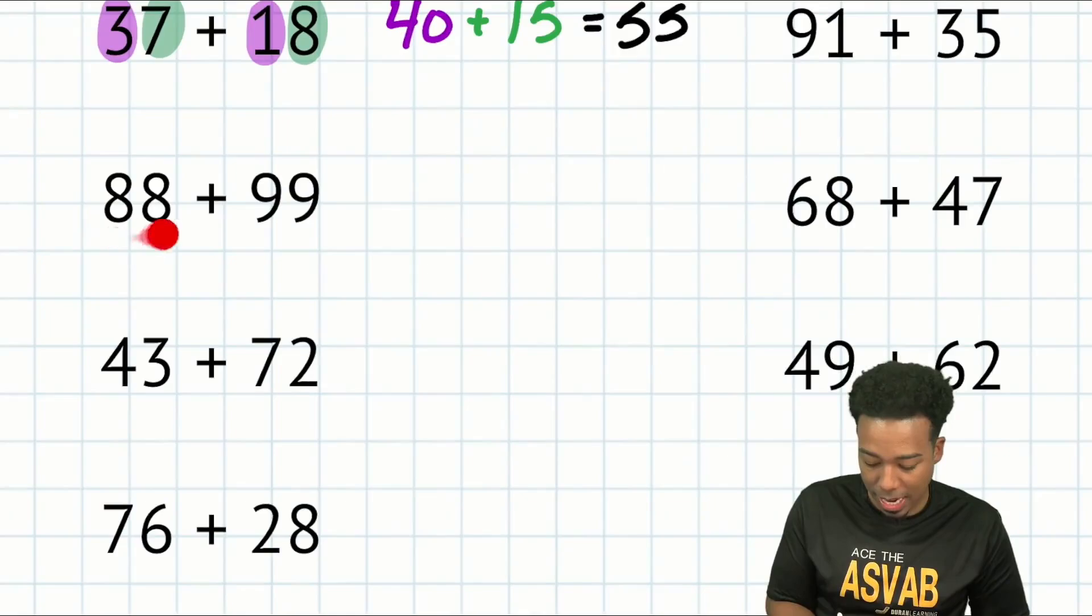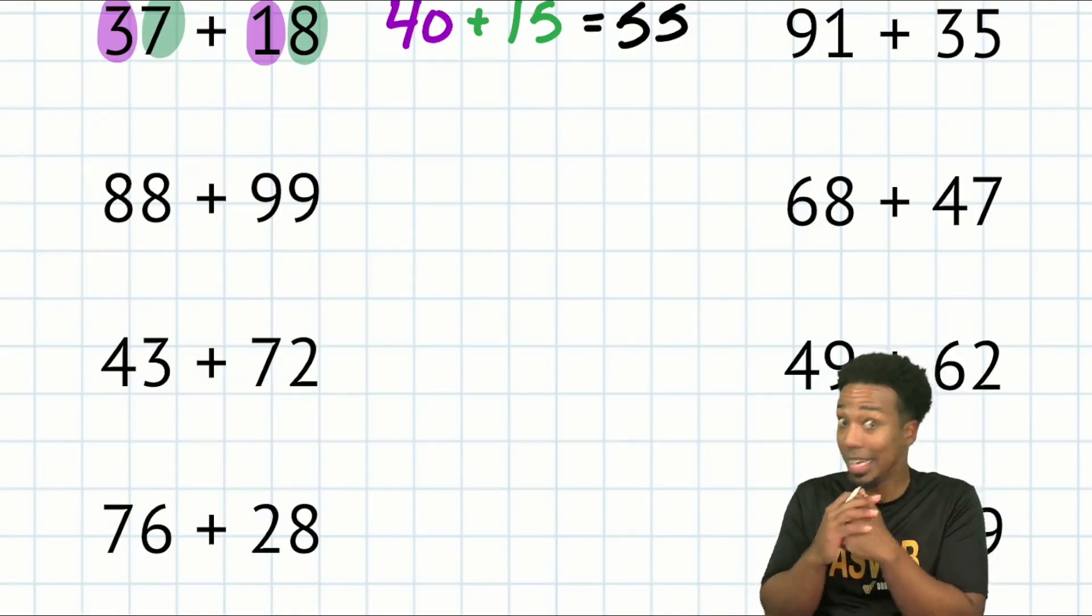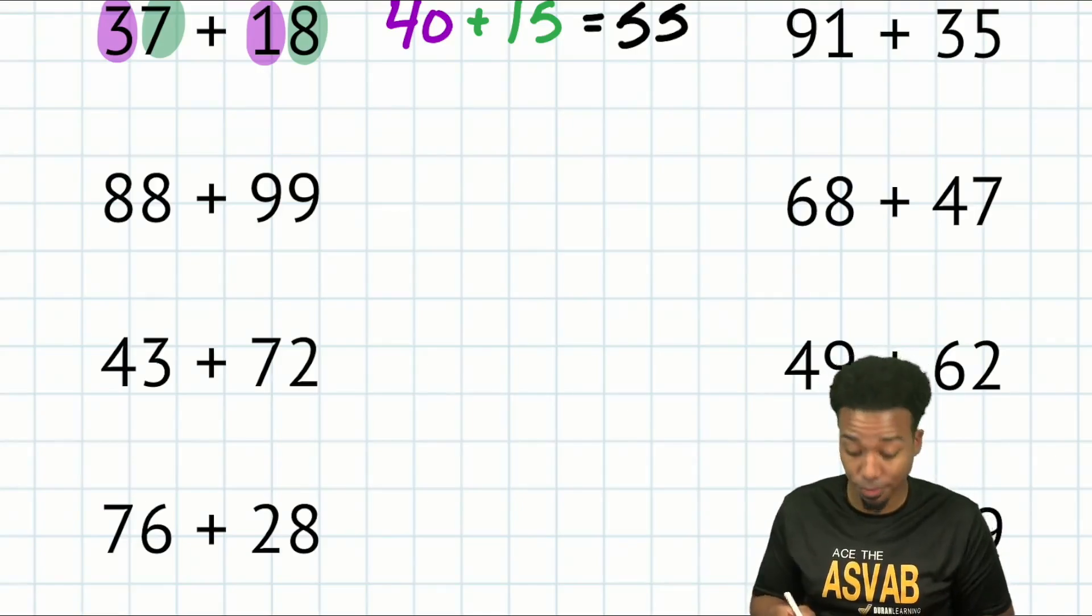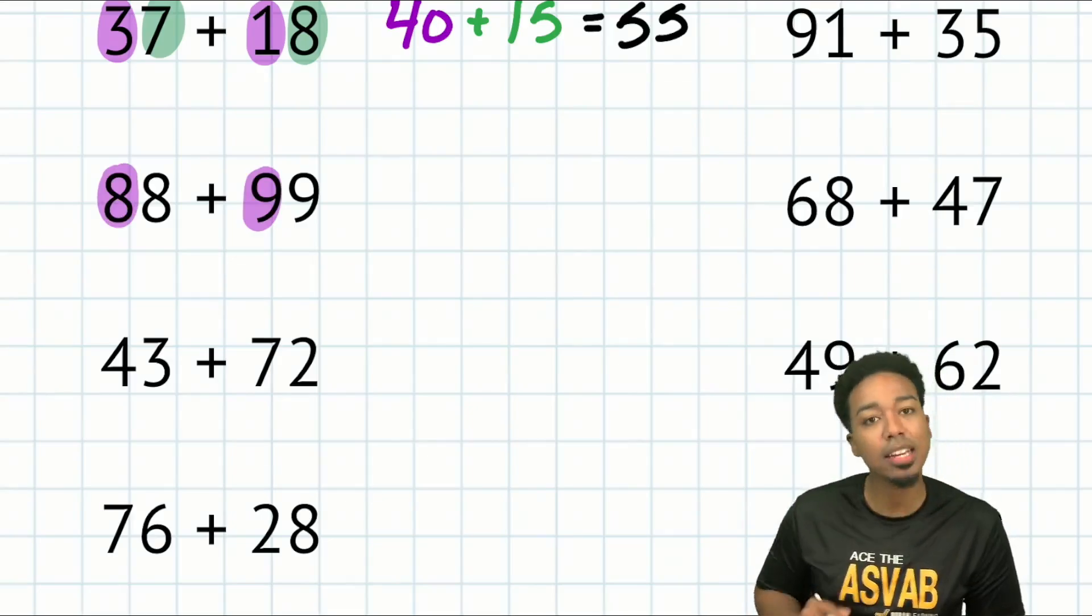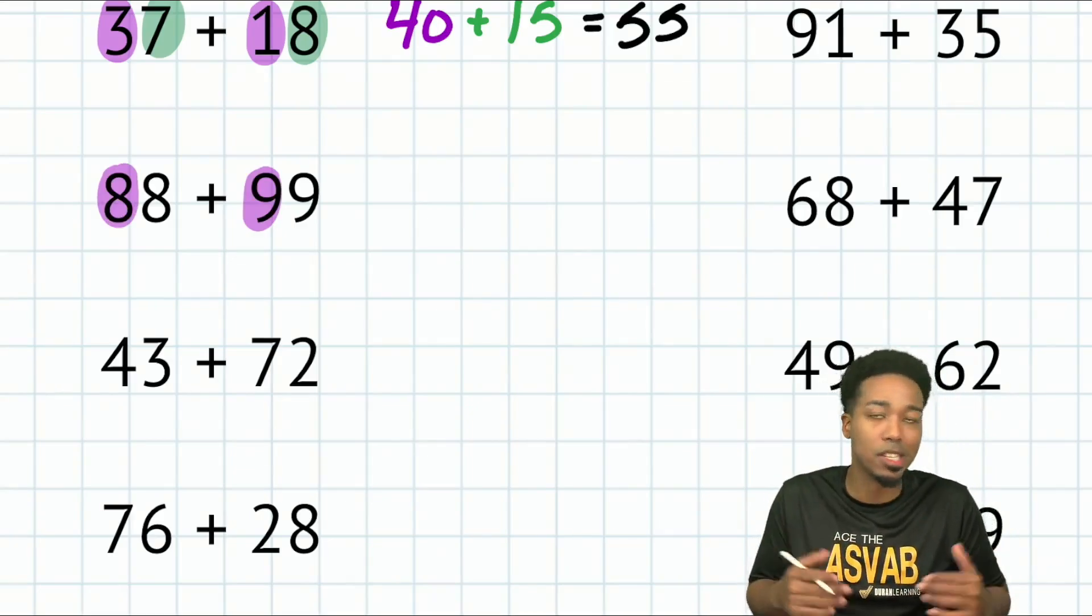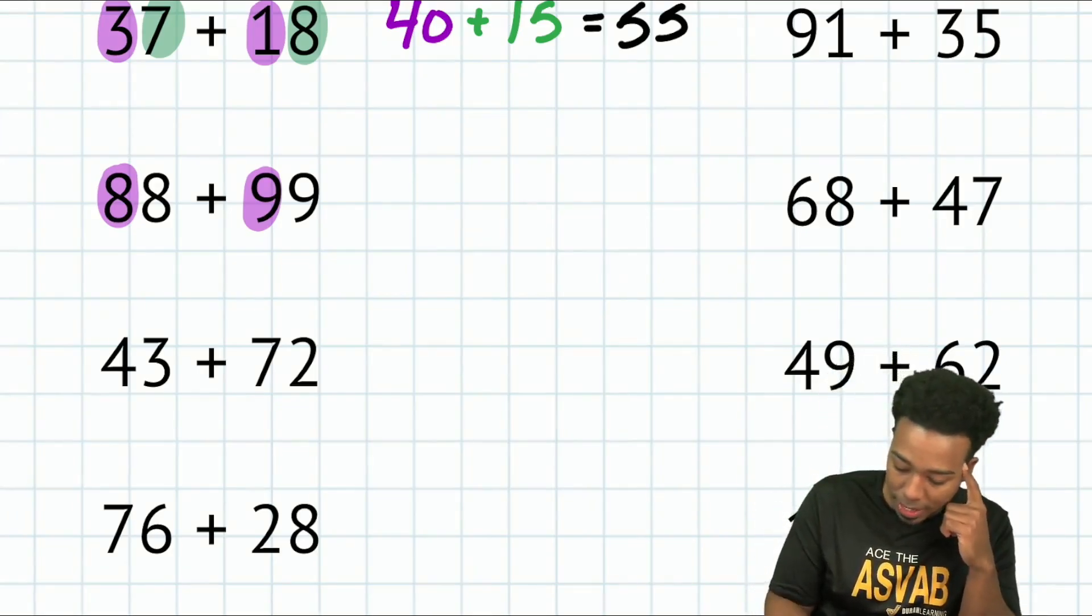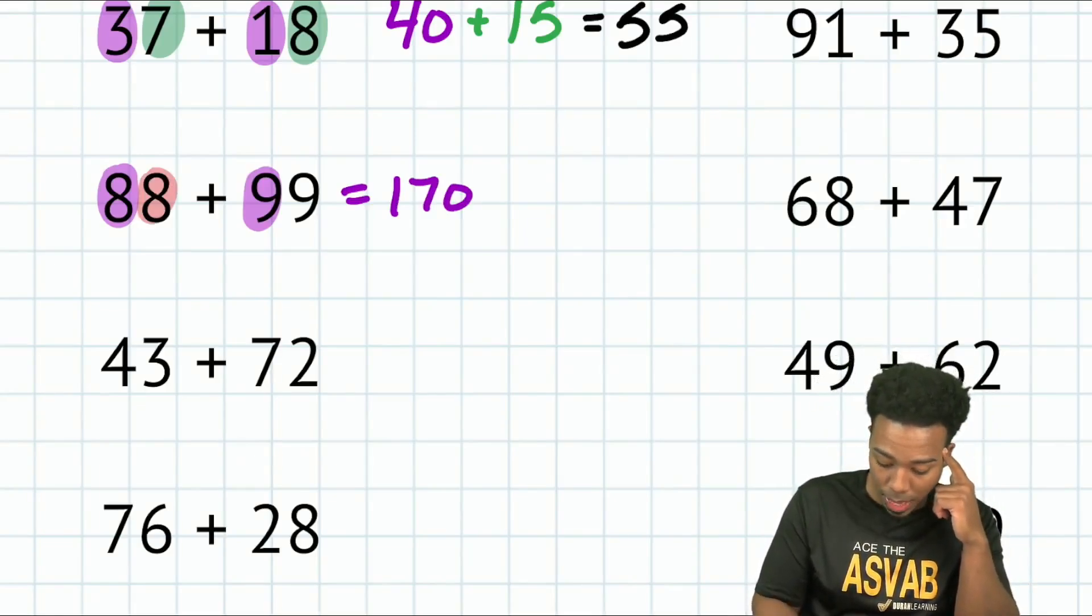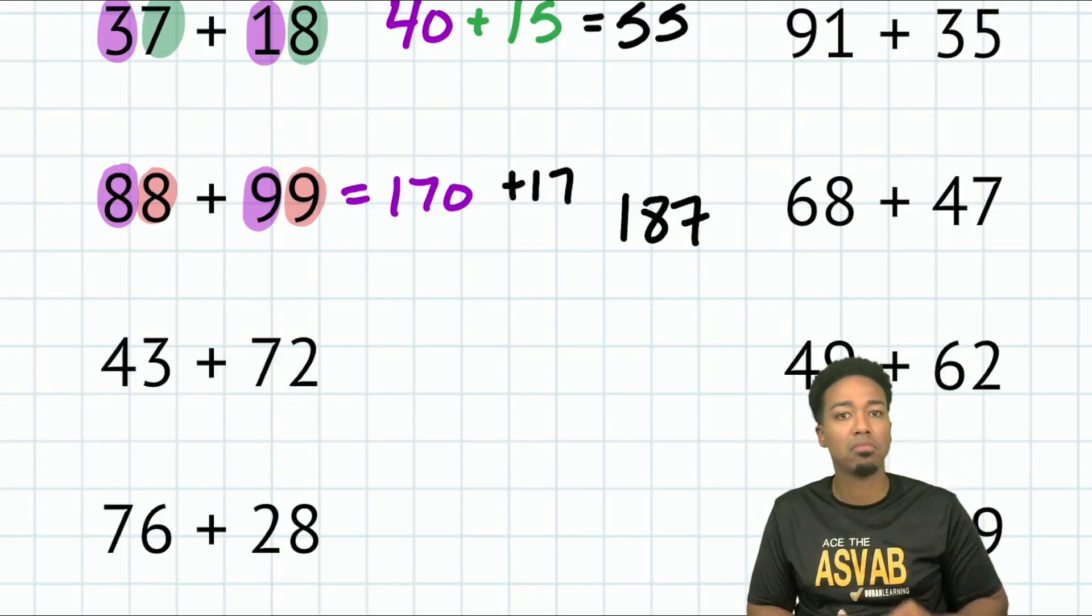We have 88 plus 99. There's actually another technique you can use here to make things even easier, but with the split and glue technique, here's what you can do. You can ask yourself, what's 80 plus 90? Well, 8 plus 9 is 17. So 80 plus 90 in my head, 170. So you have 170 plus 8 plus 9 is 17. So 170 plus 17, that's 187 right there.